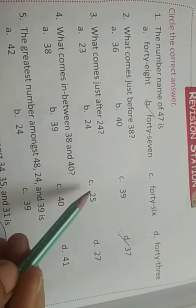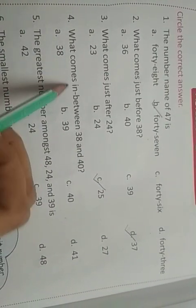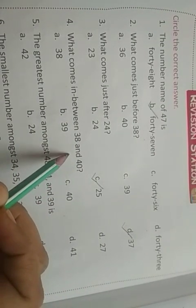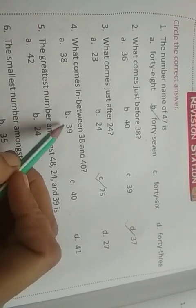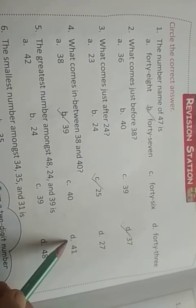Fourth, what comes in between 38 and 40? 38 और 40 के बीच में क्या आएगा? Between means बीच में. 39. a) 38, b) 39, c) 40, d) 41. So b is the correct option.